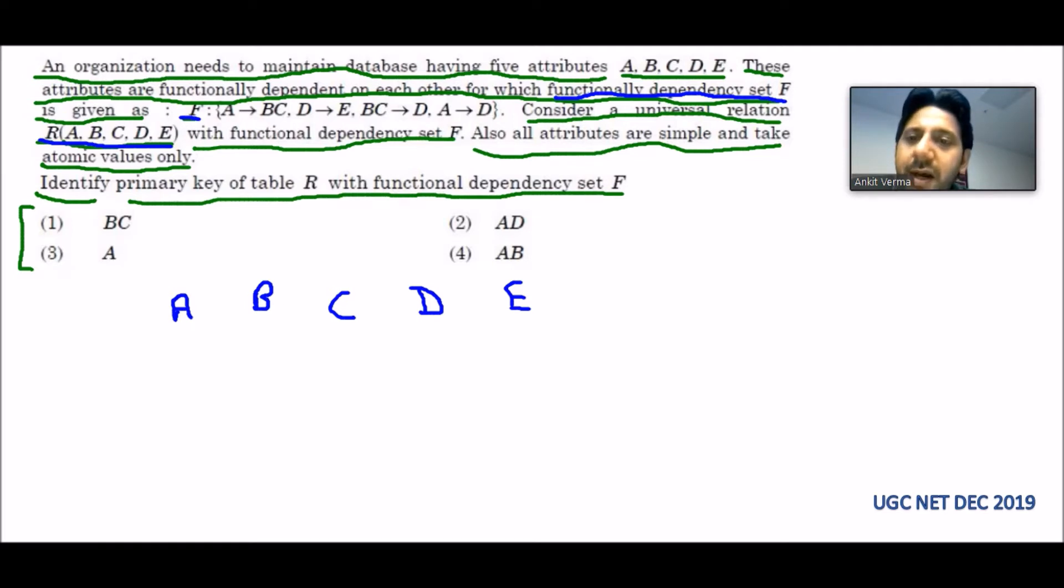The functional dependencies are: A tends to BC, so A is giving B and C. D tends to E, so D is giving E. BC to D, from BC we can extract D. A to D, from A we can find D.